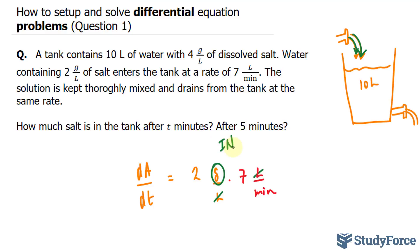And what we have to do here is subtract what's coming in with what's coming out. And what's coming out is stated right here, where it mentions drains from the tank at the same rate. So it's also draining at 7 liters per minute.